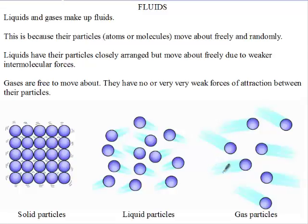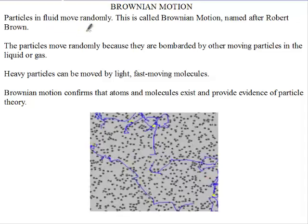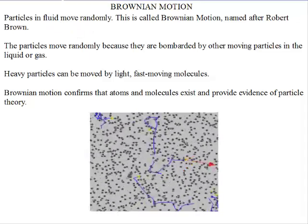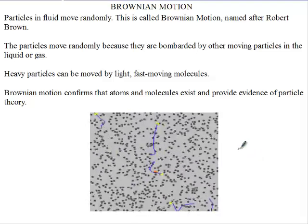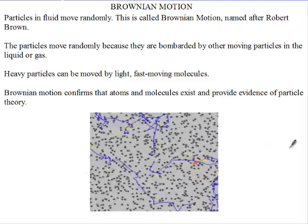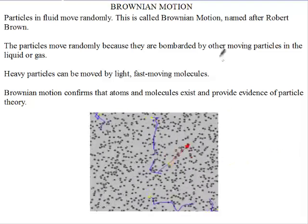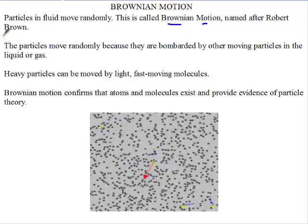We just saw in the previous video that liquids and gases make up fluids because their particles move about or flow. The particles in liquids and gases move randomly — they don't have a specific pattern of movement. This random motion is called Brownian motion, named after Robert Brown.